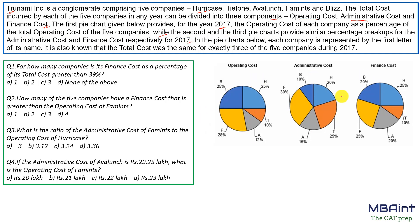The pie charts show the breakup of all five companies for operating cost, administrative cost, and finance cost. Each company is represented by the first letter of its name. It is also given that the total cost — which is the sum of all three cost components — was exactly the same for exactly three of the five companies.